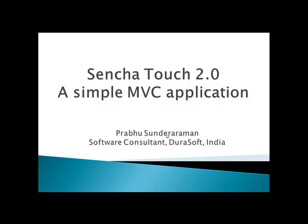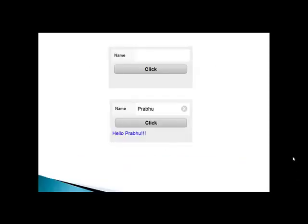Hi, let's implement a simple MVC application using SenchaTouch 2.0. What we're going to do is create a very simple form with a text box to enter your name and a click button. You enter your name and click, and it's just going to echo your name saying 'Hello Prabhu' or 'Hello Sam'. We will implement this using Sencha 2.0 with MVC.